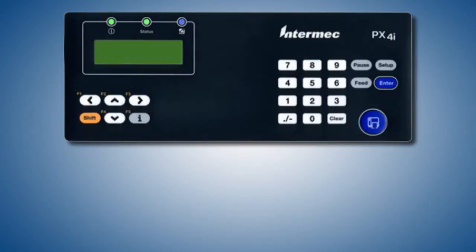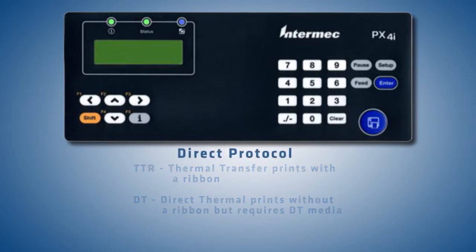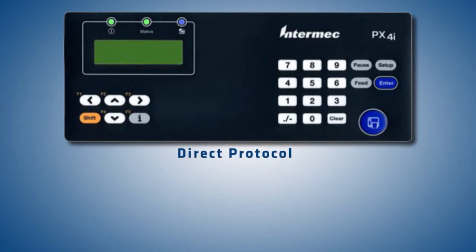This section of the video will explain how to switch between thermal transfer and direct thermal mode for both the Direct Protocol and IPL languages. As a reminder, TTR, or thermal transfer, is for when you do wish to be printing with a ribbon, and DT, or direct thermal mode, is for when you do not wish to be printing with a ribbon. We will start with Direct Protocol.